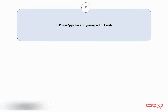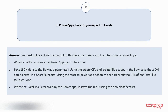Question number 13. In Power Apps, how do you export to Excel? We must utilize a flow to accomplish this because there is no direct function in Power Apps. 1. When a button is pressed in Power Apps, link it to a flow. 2. Send JSON data to the flow as a parameter. Using the React to Power App action, we can transmit the URL of our Excel file to Power App. 3. When the Excel link is received by the Power App, it saves the file using the download feature.